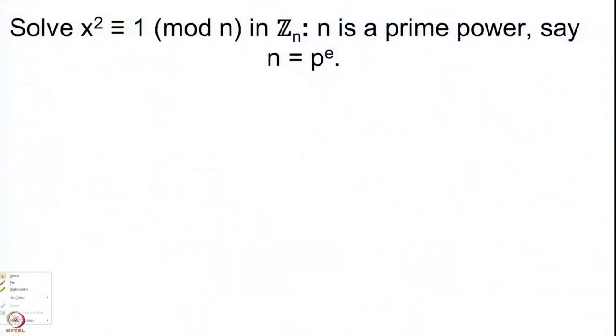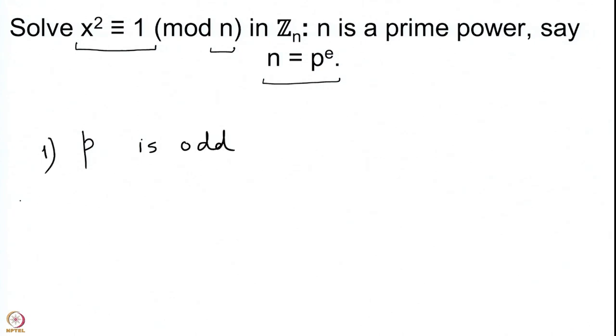Therefore, to solve x² ≡ 1 (mod n) we should first solve it modulo the prime powers. We are going to solve x² ≡ 1 (mod n) where n is a prime power. There are two cases: Case 1 is where our prime p is odd, and Case 2 is when p equals 2. We will then combine these two cases and come back to the general equation x² ≡ 1 (mod n).